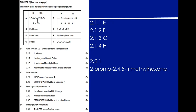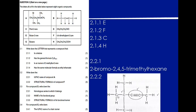For Question 2.3, write the structural formula of compound F: 4,4-dimethylpent-2-yne. Dimethyl indicates two methyl groups, both on carbon 4. Pent means the longest chain is five carbons. The suffix '-2-yne' means there is a triple bond starting at carbon 2.